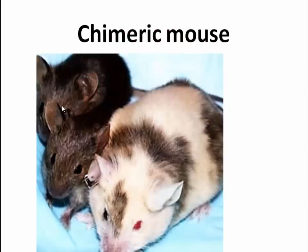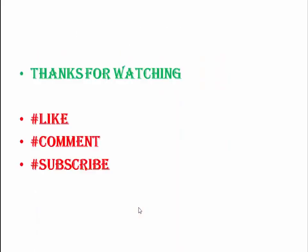Here is the Chimeric Mouse — the black mouse and the black and white mouse. In this formation, black and white both types of mouse are used, and the final result is this type of Chimeric Mouse with both black and white colors. That is all about the Chimeric Mouse Formation. If you like my videos, please subscribe.